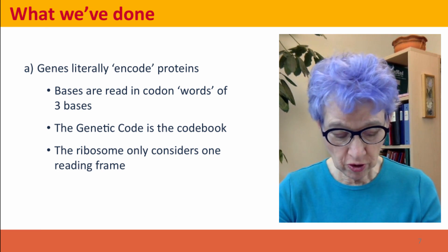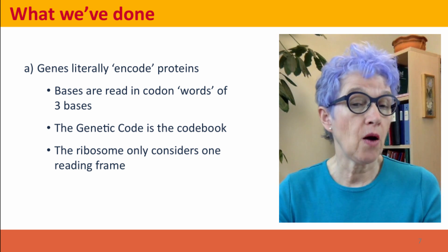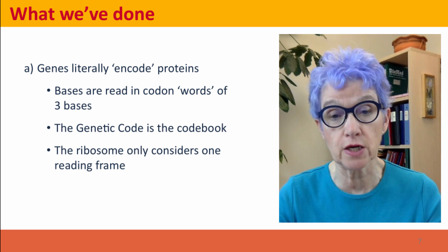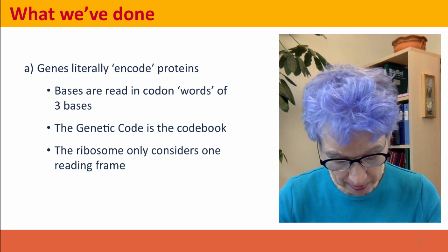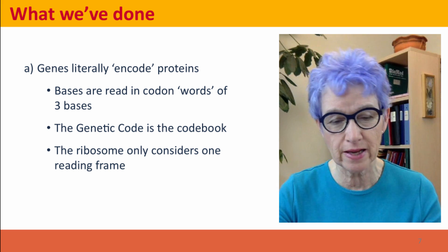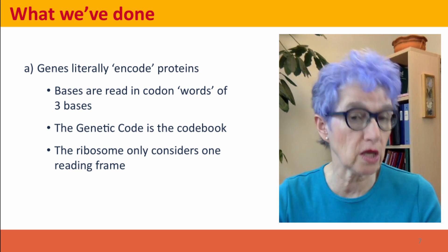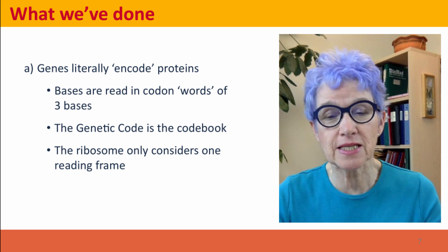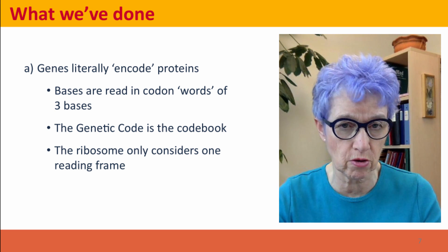We've talked very much in the language of information — coding, reading, translating codons or words. Literally, genes do encode proteins, going from one language, the language of nucleotides, to the language of amino acids. The code is read in words that are groups of three bases — it's as if all the words in our language were three letters long. The genetic code is the codebook that translates the language. To a cell, the codebook is physically instantiated in the transfer RNA molecules that bring the amino acids to the codons of the messenger RNA in the ribosome.